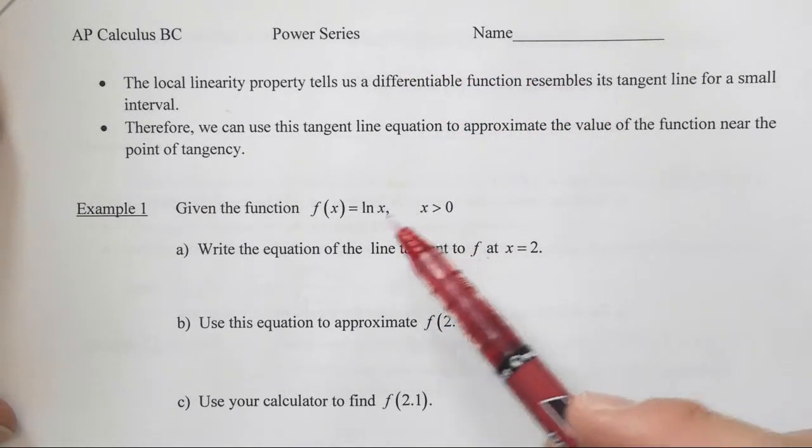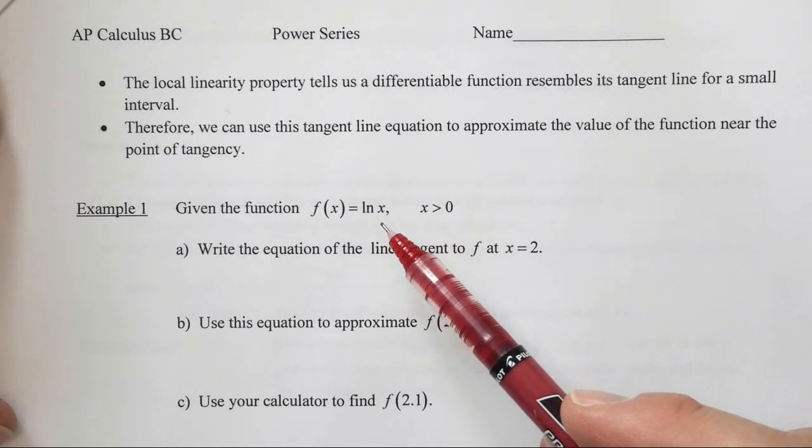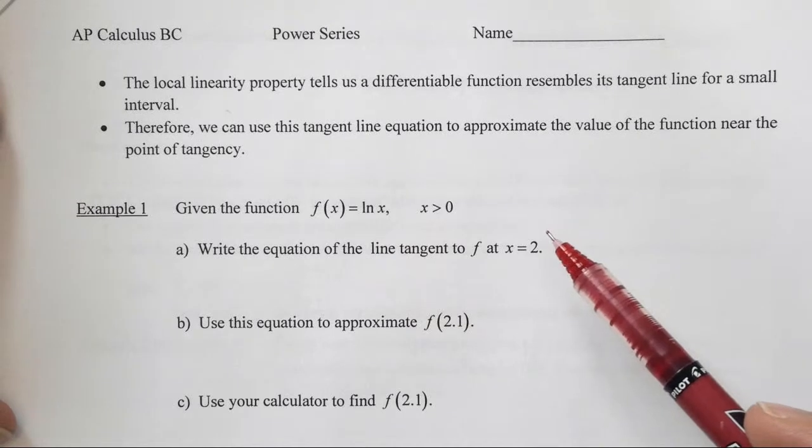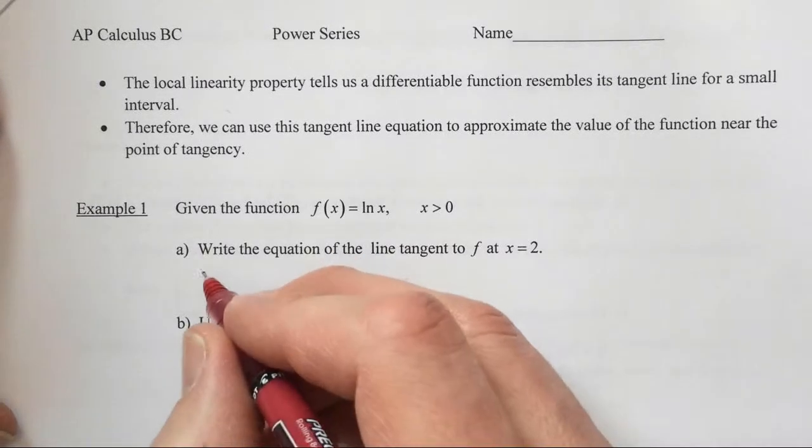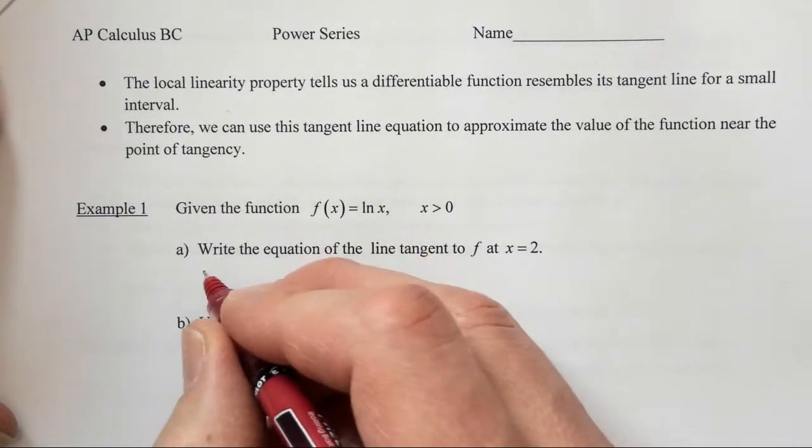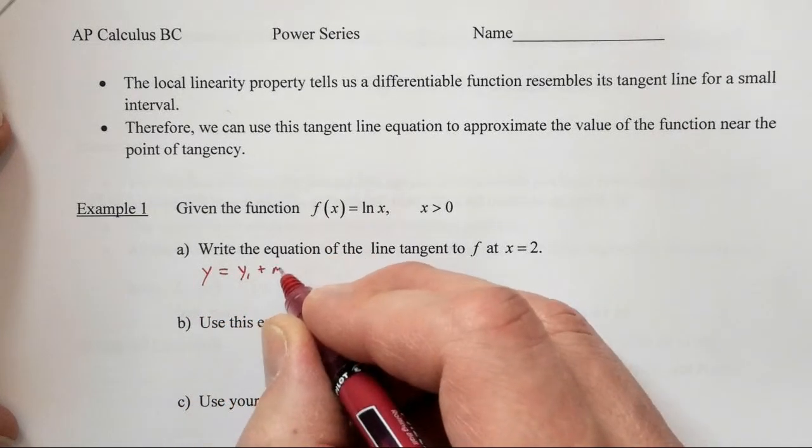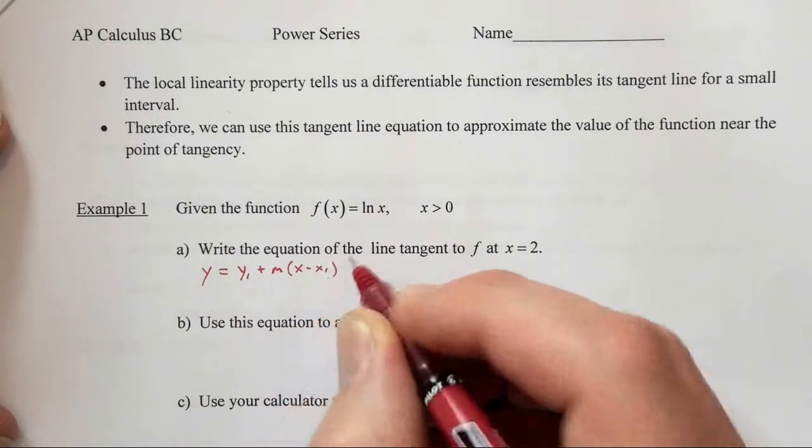Let's start with this function, the natural log of x. If we want to write the equation of the line tangent to f at x equals 2, we know that our equation using point-slope form is y equals y1 plus the slope times x minus x1.